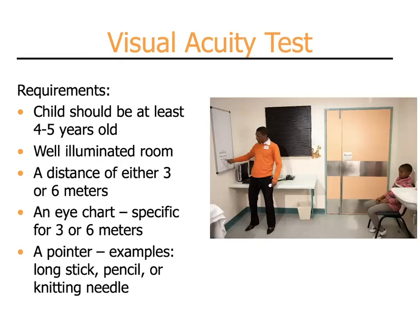If children are older and able to cooperate with visual acuity testing — generally at four to five years of age and up — it is preferred to perform vision testing with an eye chart. To do this, you will need a well-illuminated room, a distance from the child to the eye chart of either three or six meters, and an appropriate eye chart calibrated for either three or six meters. It is also helpful to have a pointer such as a long stick, a pencil, or a knitting needle, which will allow you to point to letters or numbers without blocking the view of the child.